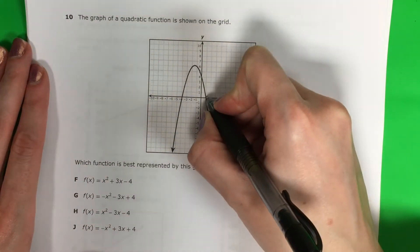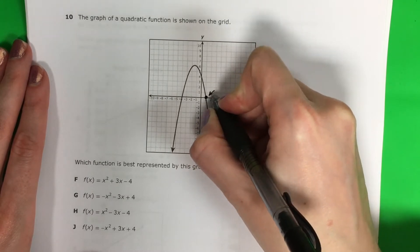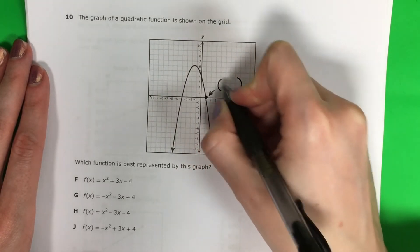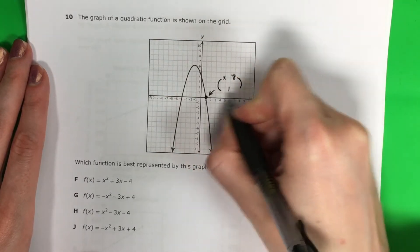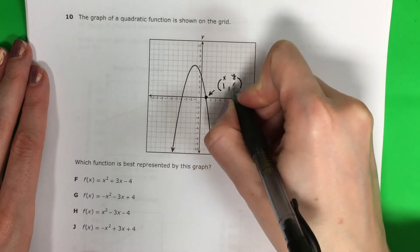OK, so I'm going to go ahead and pick this one, this x intercept, or this zero of the function. So this looks like it's touching x on number 1. So this will be 1, 0.